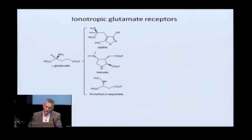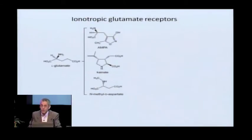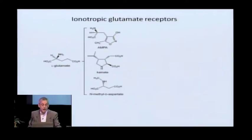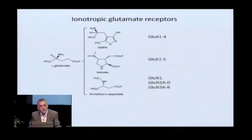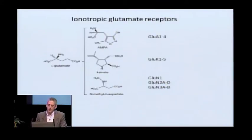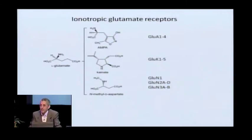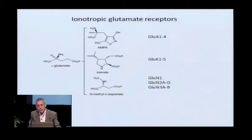This evolution in our thinking arose from a pharmacological perspective, due to the synthesis and characterization of multiple different molecules that could selectively activate different glutamate receptors: so-called AMPA, the naturally occurring neurotoxin kainate, and the synthetic molecule NMDA. This pharmacological characterization foreshadowed gene analysis, and when the genes were cloned and the amino acid sequences predicted, there were three families of glutamate receptors mirroring the pharmacological characterization: the GluA1 through 4 AMPA receptors, the kainate receptors 1 through 5, and the two subtypes of NMDA receptors — GluN1 glycine-binding receptors and GluN2 glutamate-binding subunits.